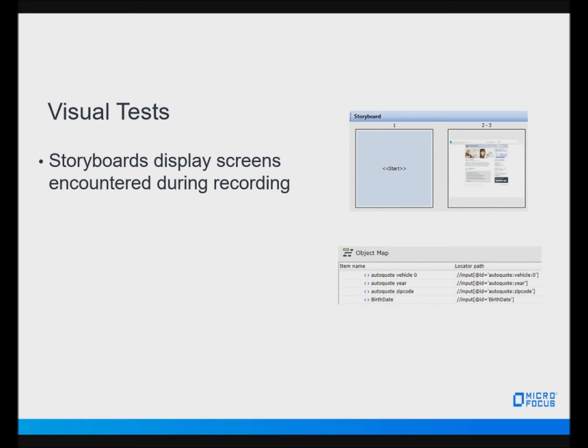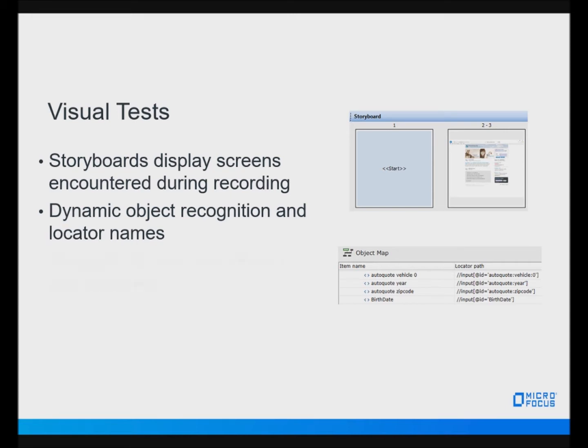Silk Test uses dynamic object recognition to uniquely identify objects such as buttons or menus, and assigns a locator name to this object for use during playback. Once a visual test is finished, testers can play back the test a limitless amount of times, with more speed and precision than a manual test execution.